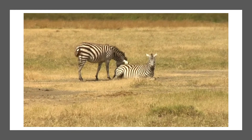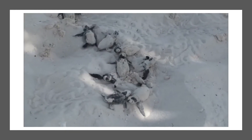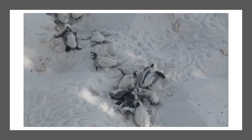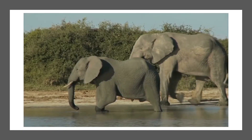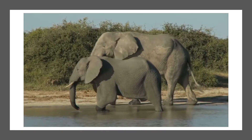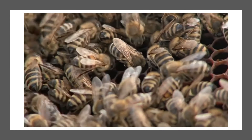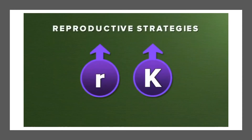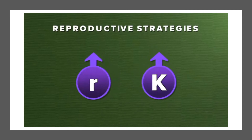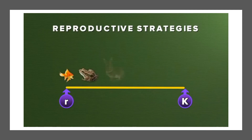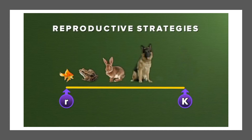There are two basic strategies: parents can invest in a few offspring with long development to maturity, as in the zebra; or parents can produce many offspring with shorter time to maturity, as in the sea turtle. Each strategy is the result of a trade-off between number of offspring and development time. Scientists recognize these two reproductive strategies as R-selection and K-selection. Each species lies somewhere on the R-K continuum, determined by evolution, which maximizes the reproductive success of a species' individuals.